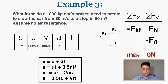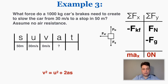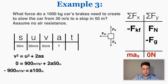Solving for acceleration and looking at my kinematics table, I'll use the third kinematic equation because that's the only one that has all four of my values. I start plugging in the numbers and find that the acceleration is negative 9 meters per second squared.